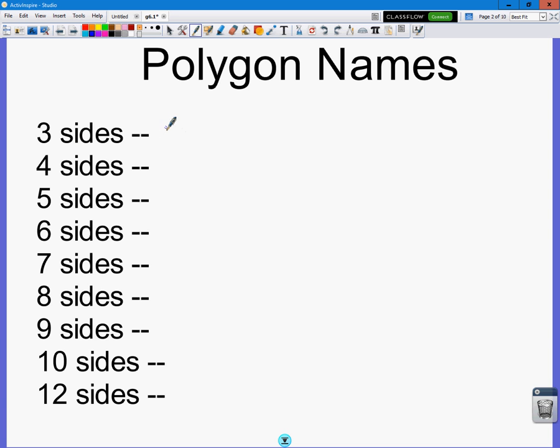Three sides, what do we call it? Triangle. Four sides. Quadrilateral. Be careful, I was learning to call it a rectilateral. Oh wait, I'm trying to throw it on rectilateral.